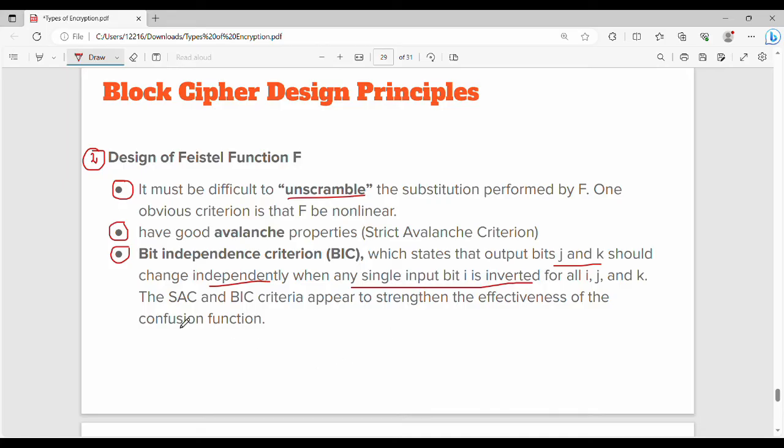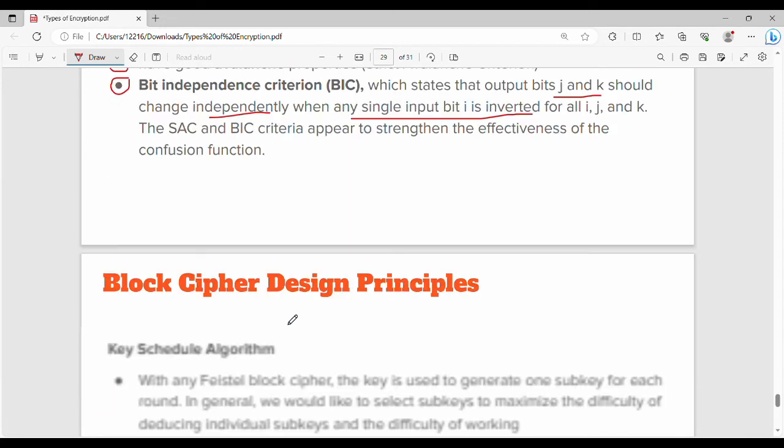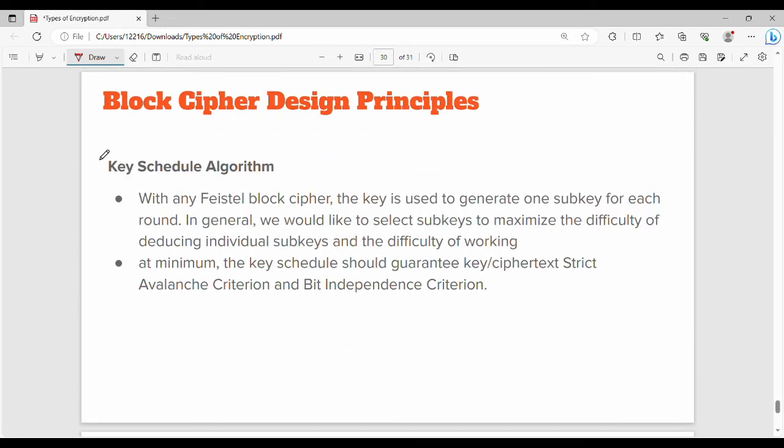Generally, one SAC criteria, that is strict Avalanche criteria, and BIC criteria mean that the performance is good. Point number three, key schedule algorithm. Key schedule algorithm is the original key K.